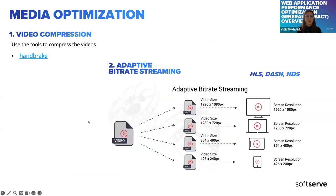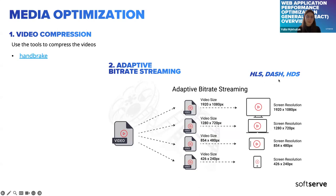For video optimization, tools like HandBrake can compress video while preserving quality. Another option is adaptive bitrate streaming — instead of serving video with one fixed resolution and bitrate, use adaptive streaming solutions like HLS (HTTP Live Streaming), DASH (Dynamic Adaptive Streaming over HTTP), or HDS (HTTP Dynamic Streaming). These help dynamically adjust quality based on network conditions and screen resolution.